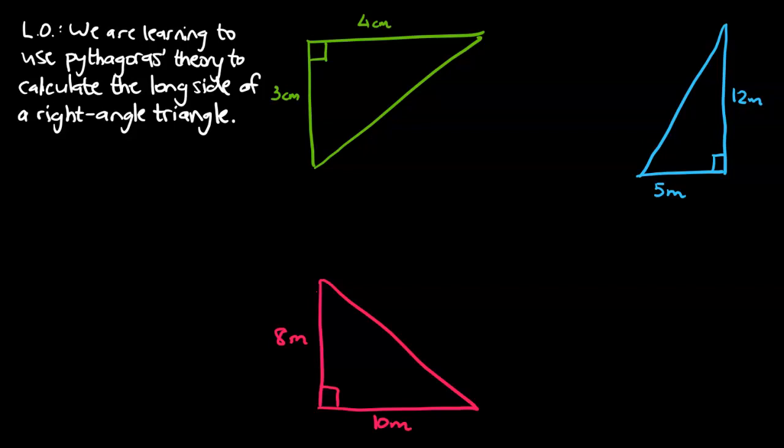Hey guys, Mr. Bowman here. Today's learning objective is in white, and we are learning to use Pythagoras' theorem to calculate the long side of a right angle triangle. So the key things we want to note is we are using Pythagoras' theorem, and we're trying to find the long sides of those triangles.